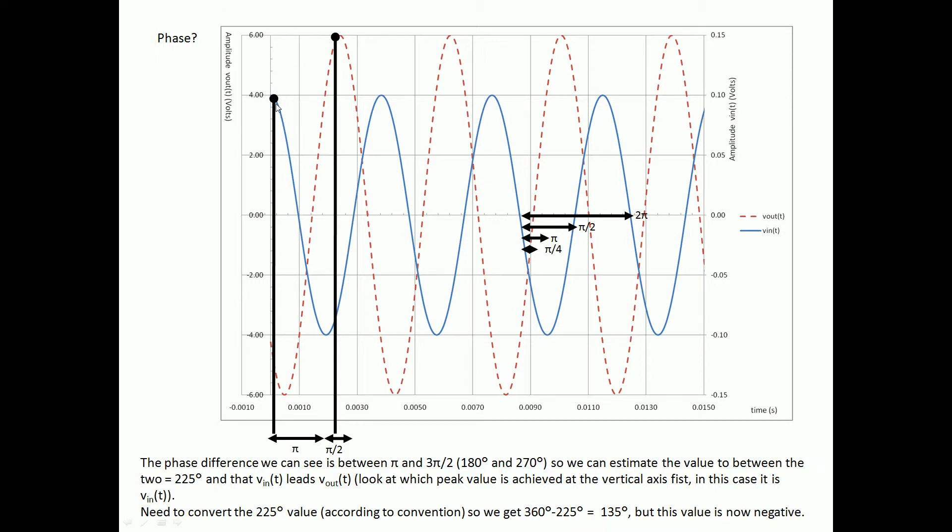So what we're interested in is the difference between equivalent points on the different waveforms. Here I'm actually looking at the maximum values, the maximum value of V_in versus the maximum value of V_out. You could do it with the zero crossing point here and here or you could do it with the minimums, it's up to you. I just do this because it's easier to start from the closest to the vertical axis as I can.